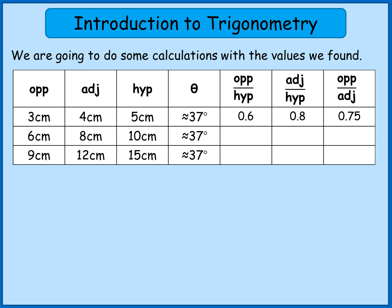For the second triangle, opposite divided by hypotenuse is 6 divided by 10 — 0.6. Adjacent divided by hypotenuse is 8 divided by 10 — 0.8. Opposite divided by adjacent is 6 divided by 8 — 0.75. So you might be starting to think there's something going on here. We've got two triangles that are the same shape but different sizes, but when we do those calculations they come up with the same numbers. And as you can predict, when you do the same for the third triangle you get exactly the same values.